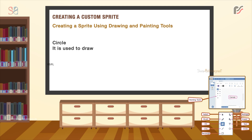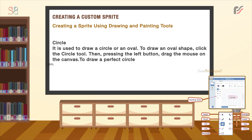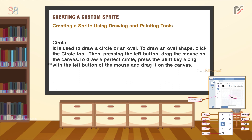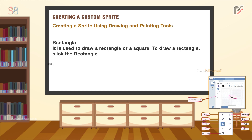The Circle tool is for drawing a circle or an oval. To draw an oval shape, click the circle tool, then pressing the left button, drag the mouse on the canvas. To draw a perfect circle, press the shift key along with the left button of the mouse and drag it on the canvas. The Rectangle tool is used to draw a rectangle or a square. To draw a rectangle, click the rectangle tool.